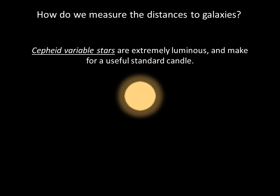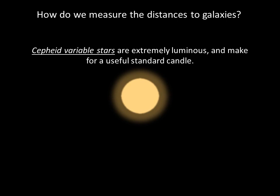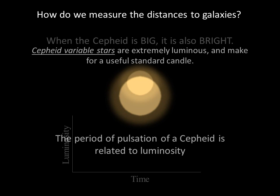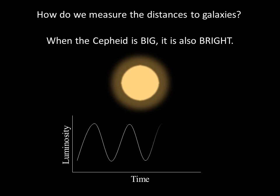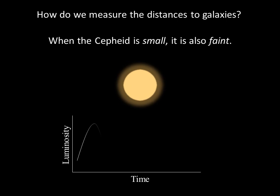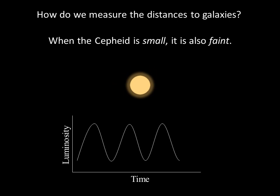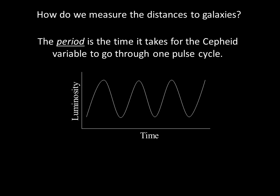The brighter the standard candle, the greater the distance we can measure. One of the most useful standard candles is a special type of extremely luminous variable star called a Cepheid variable. The period of pulsation of a Cepheid variable is related to its luminosity. When the Cepheid variable grows in size, it is at its most luminous; when it shrinks in size, it is at its least luminous. The period is defined as the time it takes for the Cepheid variable to go through one cycle — bright to dim and back to bright. Cepheids can have periods ranging from a few days to a few months.